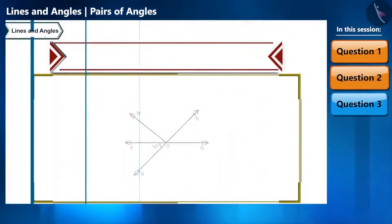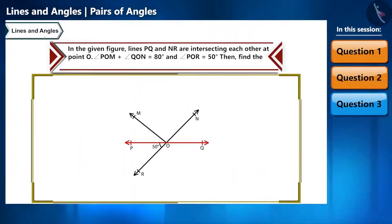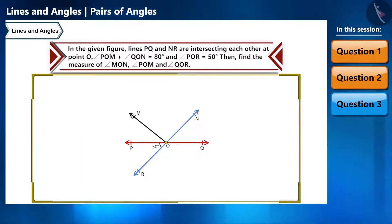Let's see the next question. In the given figure, lines PQ and NR intersect each other at point O. Angle POM plus angle QON equals 80 degrees, and angle POR is 50 degrees. Find the measure of angle MON.